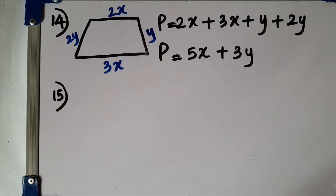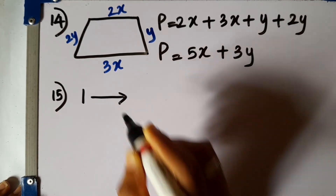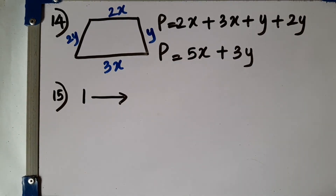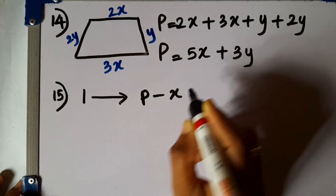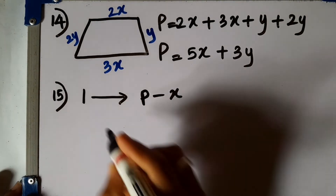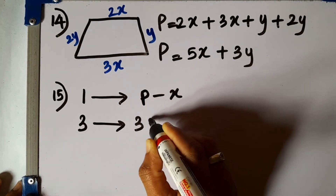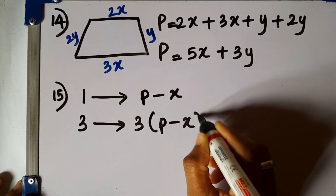Question number 15. The price of a pencil is x less than the price of a pen. If the price of a pen is p rupees, write down an algebraic expression for the price of 3 such pencils. The price of one pencil is p minus x. Then the price of 3 such pencils should be multiplied by 3. So the expression is 3 times p minus x.